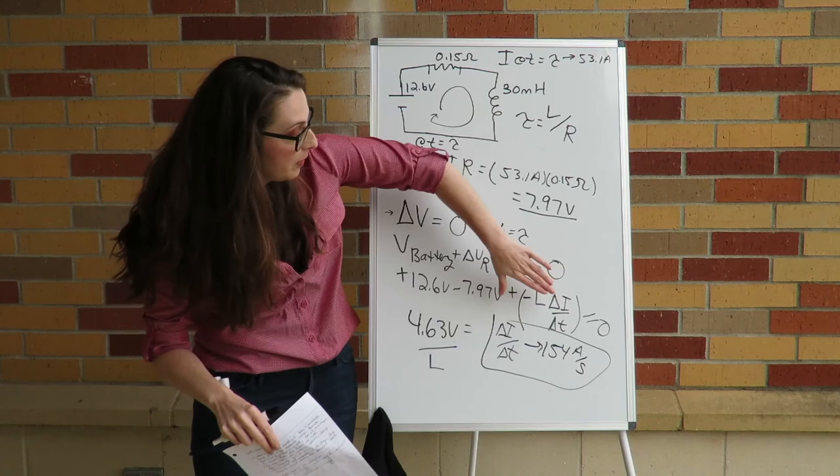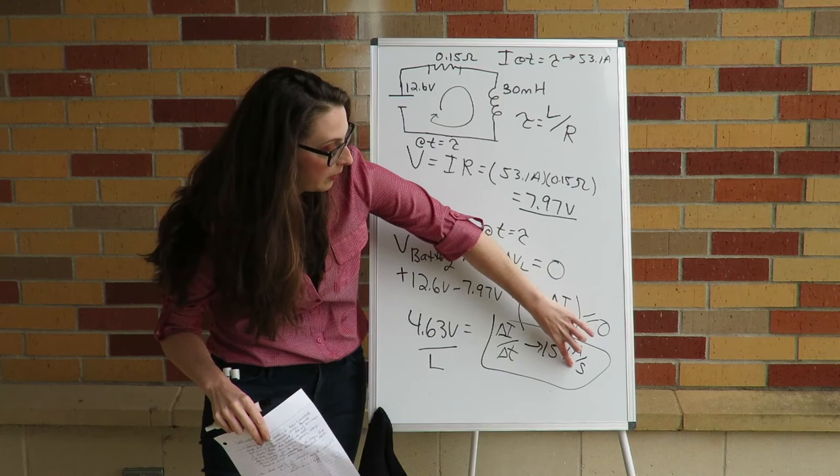The unit of rate of change of current is amperes per second — a change in current over time. If we wait many, many time constants, this rate of change of current will become zero.